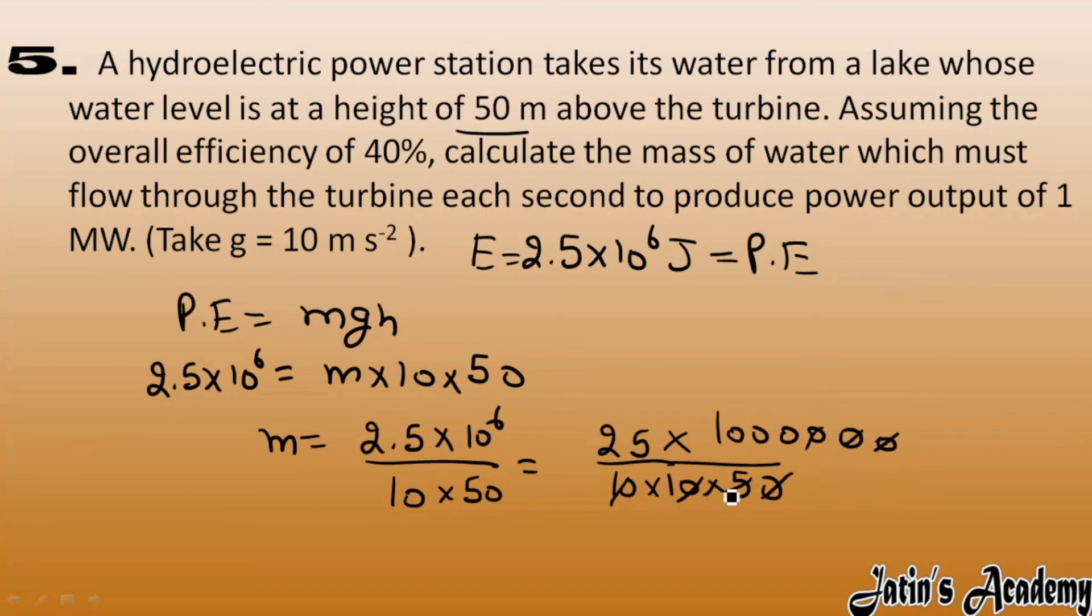So here you got 5 into 1000 as mass is equal to 5000 kg. It means that the water flows 5000 kg in 1 second. They are actually asking about the mass flow rate. So mass we got it as 5000 kg for each second. Clear?